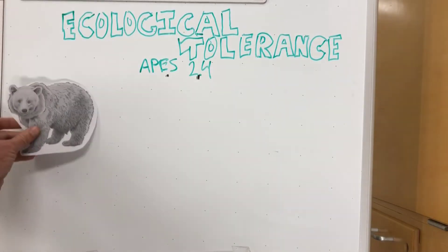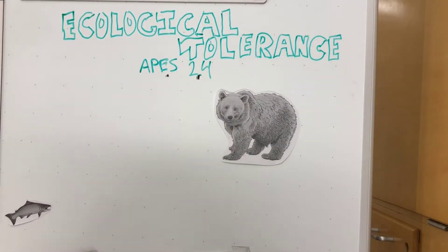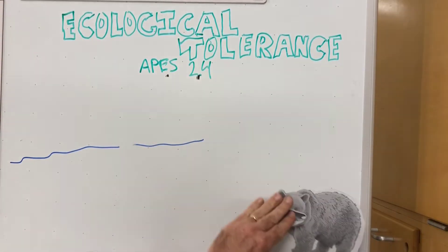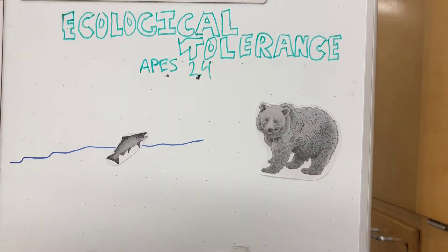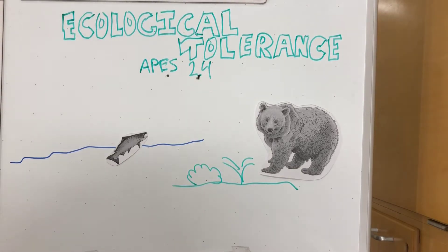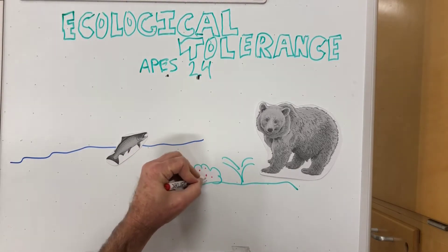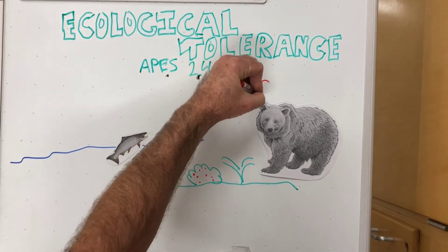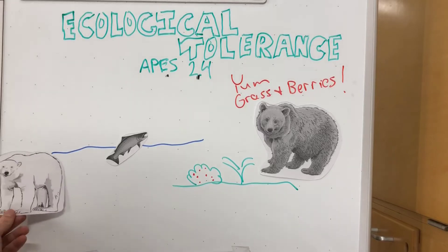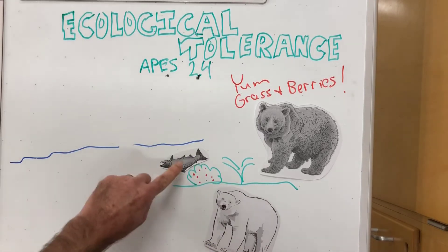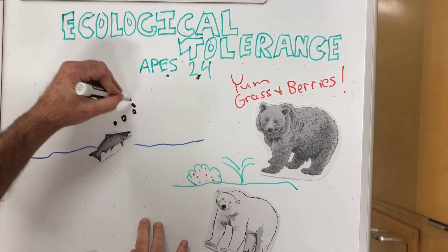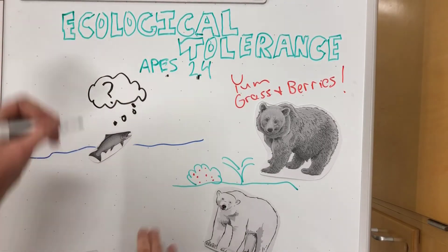Polar bears are very similar to brown bears evolutionarily, and brown bears — or Kodiak bears — eat salmon as they come up the river. They're actually the largest land predators there are, but they're not only predators. They're actually omnivores, and the majority of their diet isn't fish — it's actually berries and grasses. So what's going to happen as polar bears move into the range of grizzly bears?